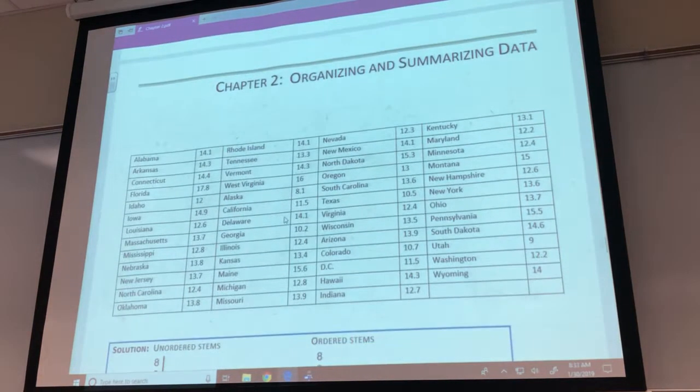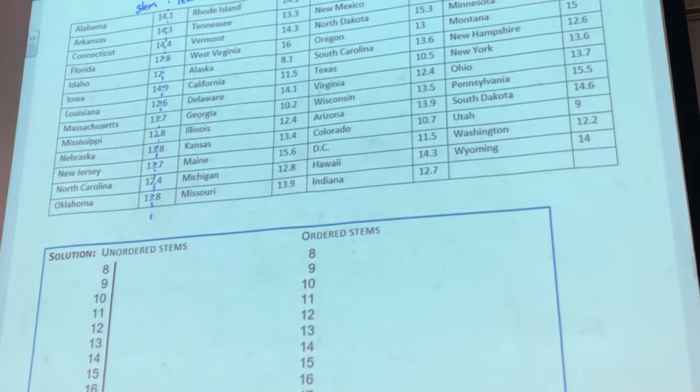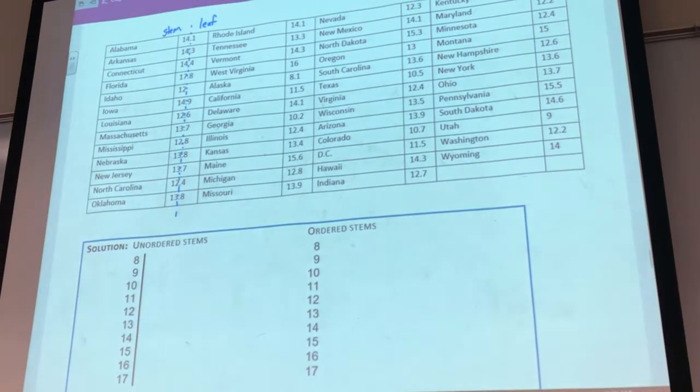So now I can do my stem-leaf plot a little bit faster. If I look at my numbers here, if I just look at Alabama and Arkansas, they both start with 14. This one has a 0.1, this one has a 0.3. If I look at this decimal, that kind of separates it for me. So the number after the decimal, that's going to be my leaf. And the number before it is going to be my stem. So for the first three, 14 is my stem, and then I've got a stem of 17, and then 12. If there's not a decimal after it, this is just going to be assumed to be a 0.